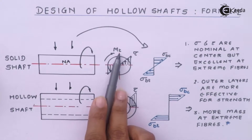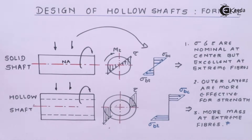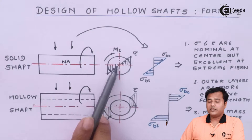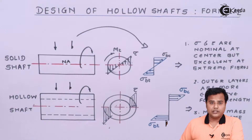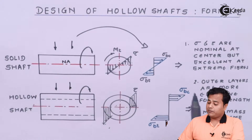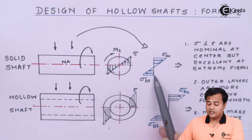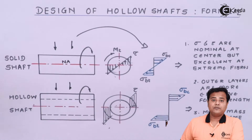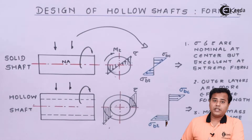When torque acts, the shear stress distribution shows that the maximum shear stress is on the outer side of the shaft. As we move toward the center, the value of stress becomes almost negligible. The same applies to bending stresses — maximum bending stresses act at the extremities of the shaft diameter, while at the center they become almost zero.